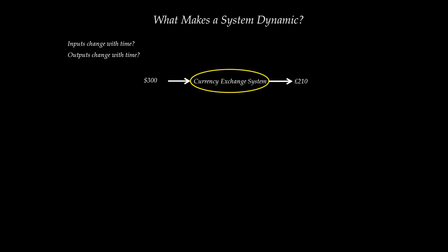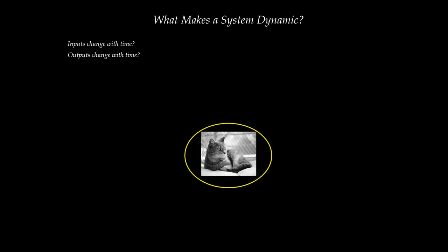That definition just doesn't seem satisfactory when discussing dynamic systems. So how does the dynamic systems community define a dynamic system? Let me use a different example: a house cat. On some day, I'm going to sing a food song to the cat — a song that tells the cat it's being served food — and I'm going to serve the cat a bowl of food.